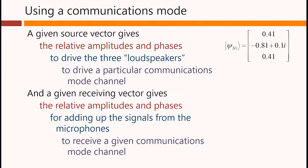And a given receiving vector gives the relative amplitudes and phases for adding up the signals from the microphones to receive a given communications mode channel. So we add up the microphone outputs with these complex amplitudes. This would give us the first channel in both cases here.